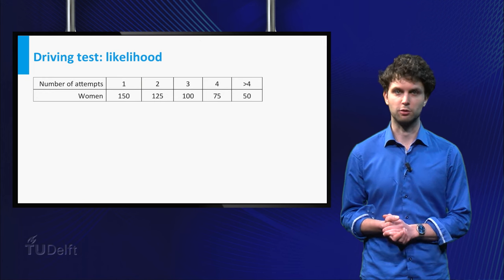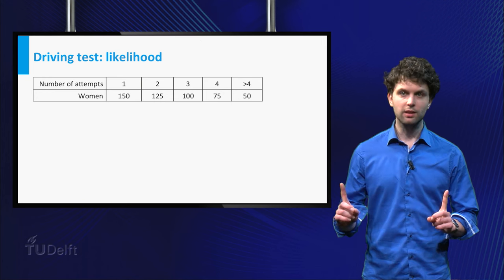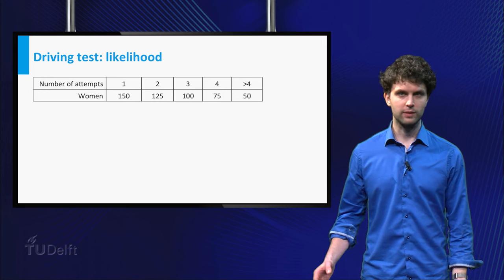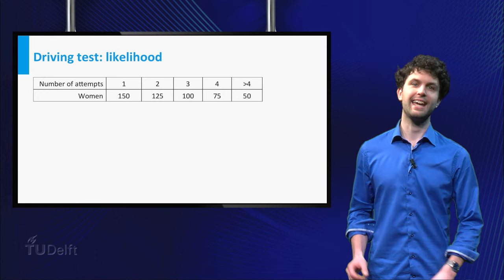Now, let's apply the maximum likelihood principle. Remember, that means that we want to find the value of P such that the data, here at the table with results, is most probable.